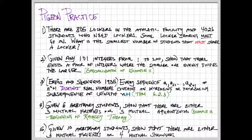And taking that again, kicking it up a notch, given 10 arbitrary students, show that there are either 3 mutual friends or 4 mutual acquaintances. You might want to take a few minutes, think about these problems, see if you can make any headway on your own, and when you're ready to come back, start part 4.